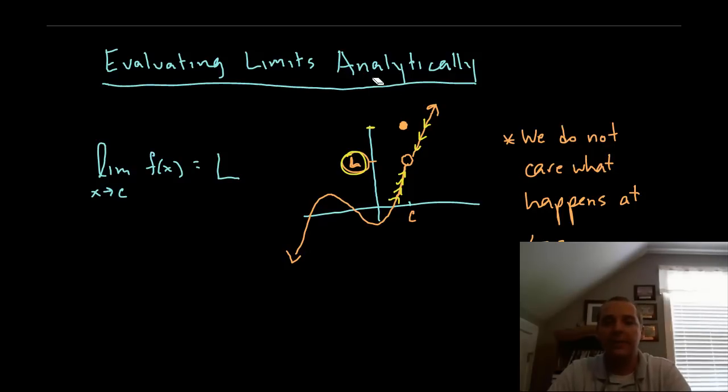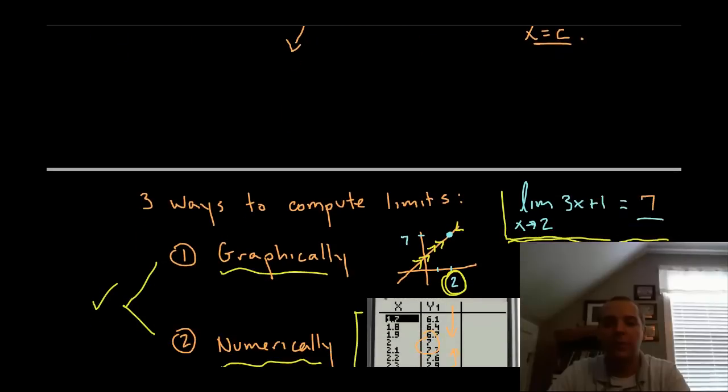Sometimes it's a happy coincidence where whatever the limit is might happen to match what the function value is at 2 or wherever your c value is. But if there is a discrepancy, if the function value at 2 is somewhere else, then the limit may not be the same as the function value. The limit will be still what the function approaches.